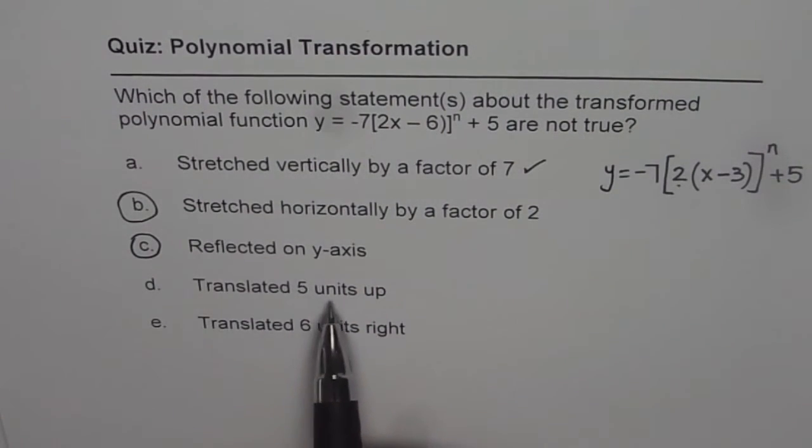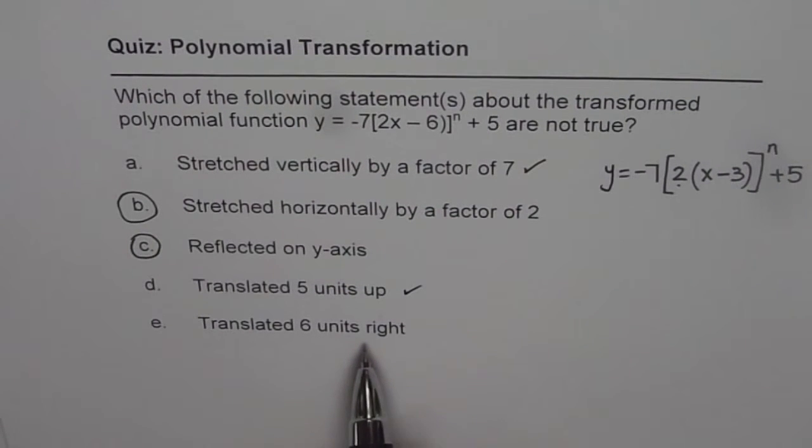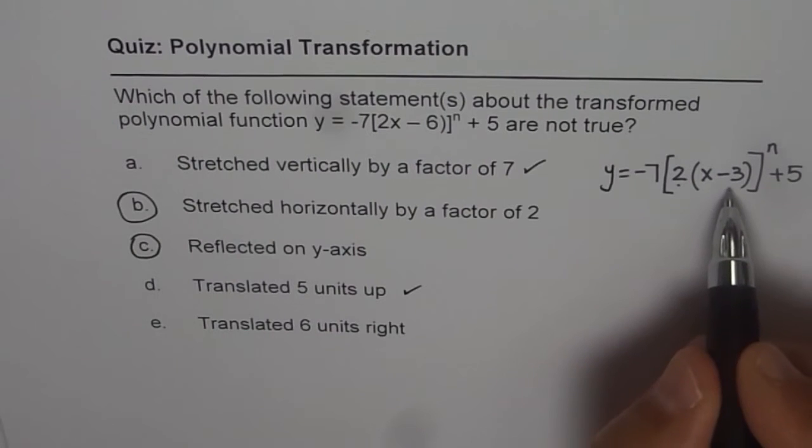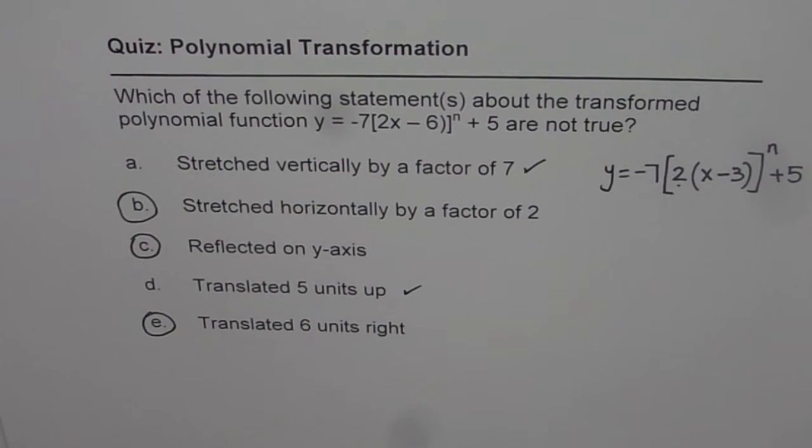Now, we have translated 5 units up. That is correct. Translated 6 units to the right. That is incorrect. It is 3 units to the right. So, this is also incorrect. So, here we find 3 incorrect statements. Make a note of these. At times, we have seen these mistakes in test papers also. I hope that helps. Thank you.